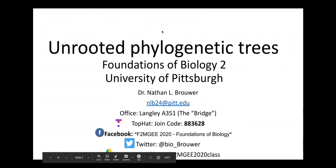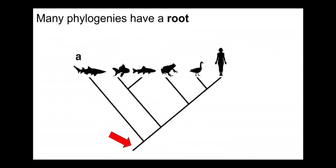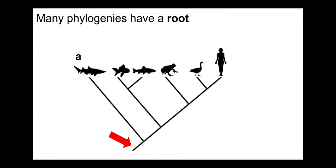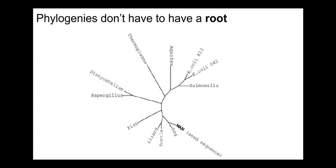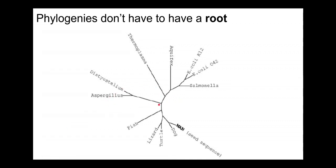In this video I'll talk about unrooted phylogenetic trees and show how they're interpreted. Many phylogenetic trees have a root — a node near the bottom that indicates the common ancestor of all of the taxa on the tree — but phylogenetic trees don't have to have a root. Here's an example shown as a spiral, where the root is not indicated and we don't know where the initial common ancestor of all the species is.